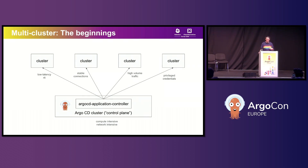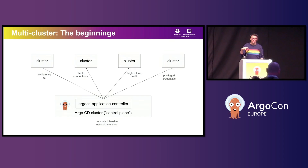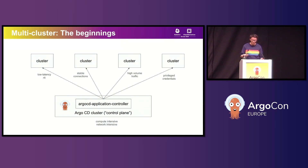But this mechanism came with its own set of problems. Connecting a cluster to Argo CD is a very expensive operation in terms of compute and network. Argo CD will establish long-lived connections to remote cluster watches so that it can react to any change happening within the clusters. And depending on how big these clusters are and how busy they are in terms of changes, you can very quickly hit the vertical scaling limit of the application controller itself.